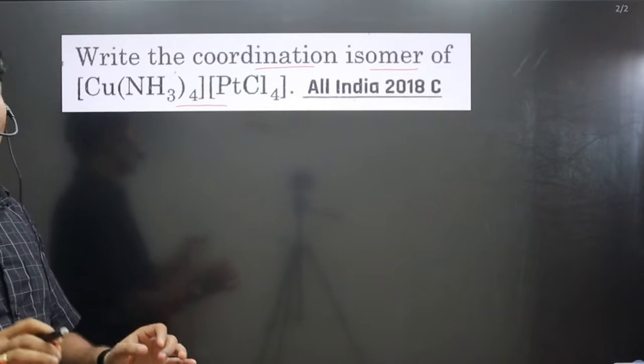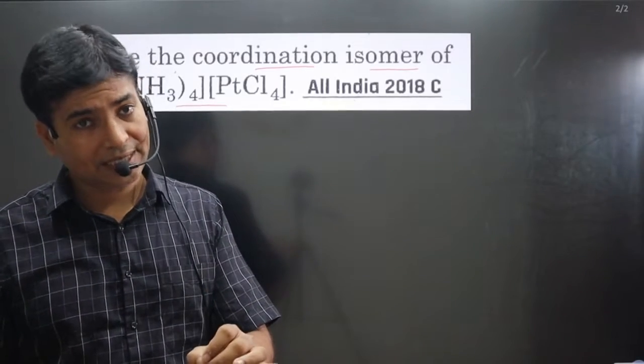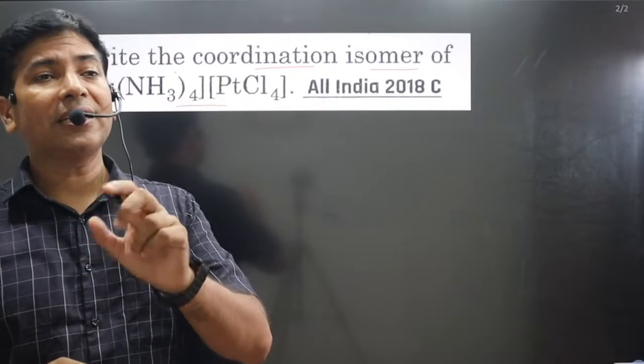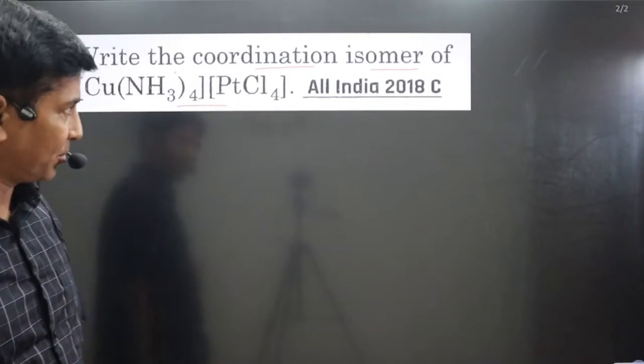And always keep in mind coordination isomer is the isomer in which interchange of the ligands takes place between the central metal atom, between the two central metal atoms.